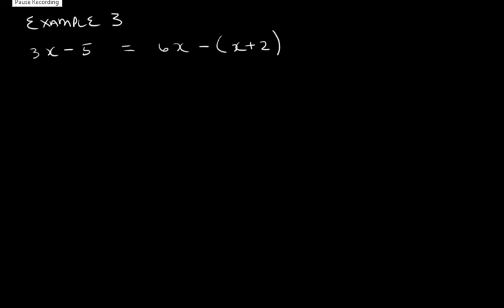Let's look at example 3. We've got 3x - 5 = 6x - (x+2). So again, there's an invisible 1 which we need to multiply out into the brackets.